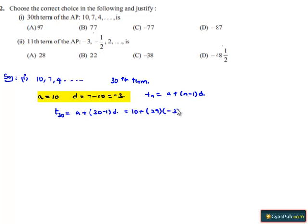29 times 3 is 87. This equals 10 minus 87, which is -77. Therefore the 30th term is -77, and option C is the correct option.